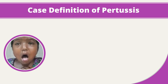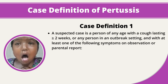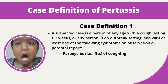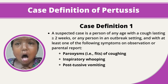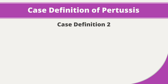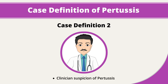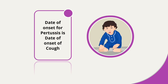A case of pertussis is a person of any age with a cough lasting two weeks or more and having paroxysm of cough, inspiratory whoop, post-tussive vomiting, or apnea — or if a clinician suspects pertussis. The date of onset for pertussis is the date of onset of cough.